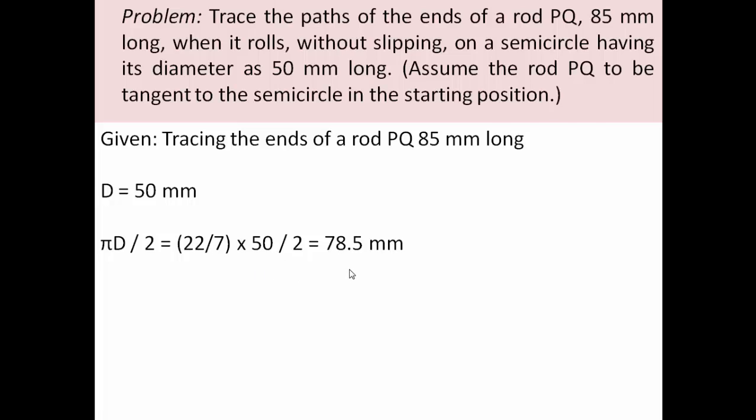Let's see the construction. We have a center point and a line representing the diameter of the semicircle. With this as center and with this much as the radii, I'm going to draw a semicircle having a radii of 25, since its diameter is 50 millimeters.